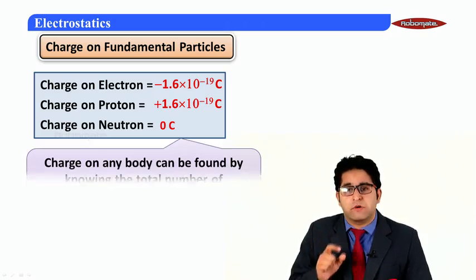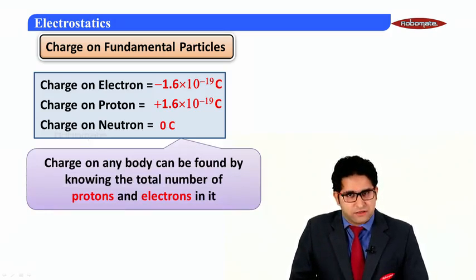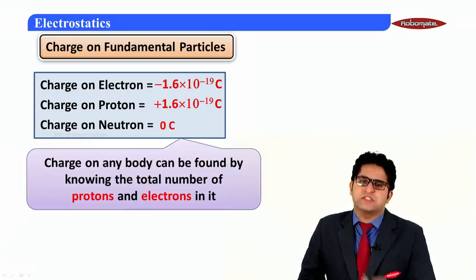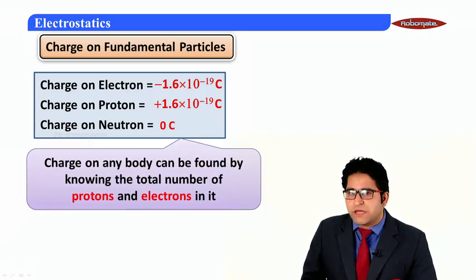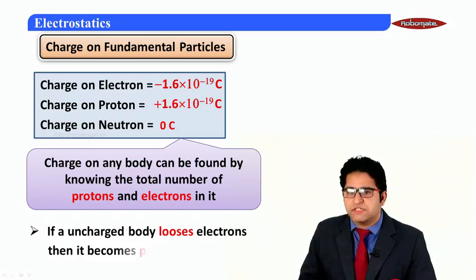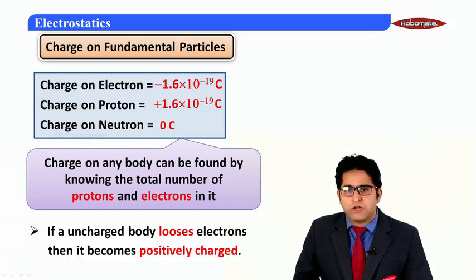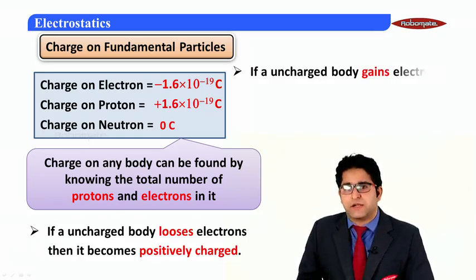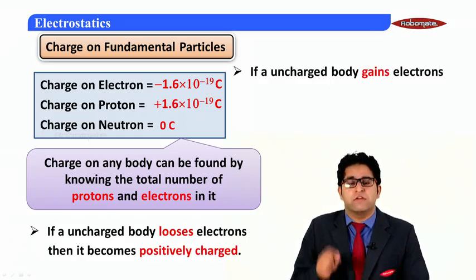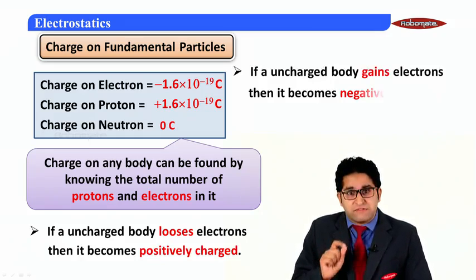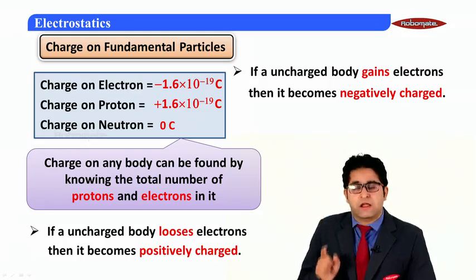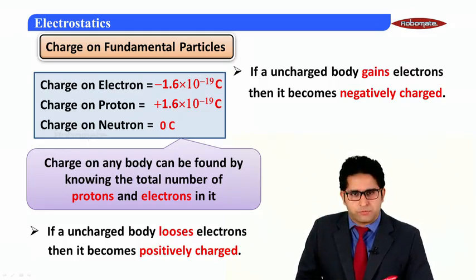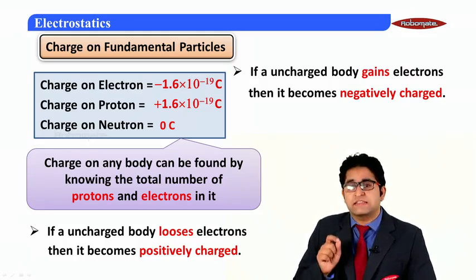If we know the total number of protons and electrons in a given body, we can calculate the amount of charge. If any uncharged body loses electrons, it will become positively charged, and if any uncharged body gains electrons, that body will become negatively charged.